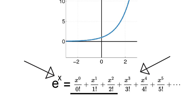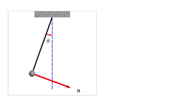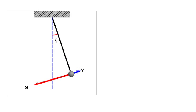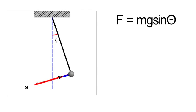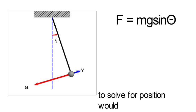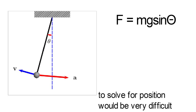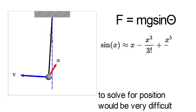The first time you would see where this is used is in physics. In physics, the force on a pendulum that is swinging is mg sine of theta, where theta changes as it swings. But given this force, to solve for position would be very difficult if you tried.